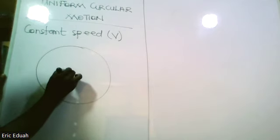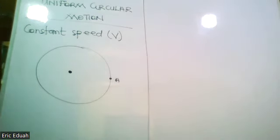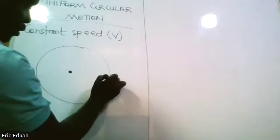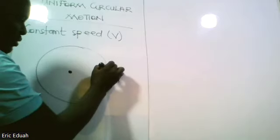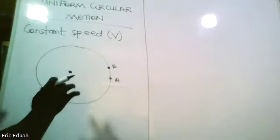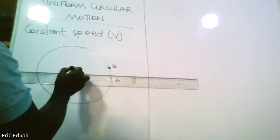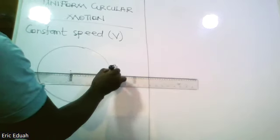Let me draw the circle. A body is in circular motion. It starts from a point A with a speed v, and within a time interval t comes to a new position B.